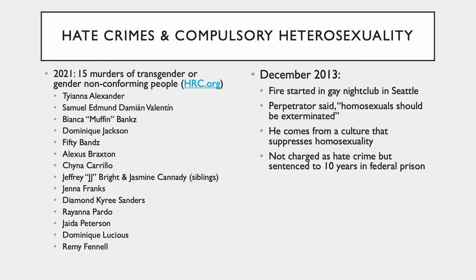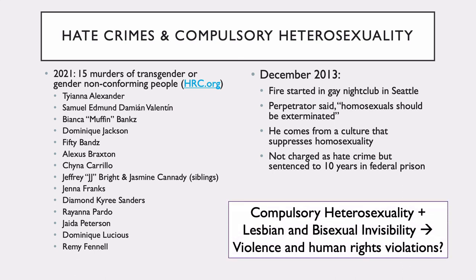Unfortunately, several hate crimes can be tied to compulsory heterosexuality. Already in 2021, there have been 15 murders of transgender or gender non-conforming people — the people listed here. Looking back to December 2013, a fire was started in a gay nightclub in Seattle; the perpetrator was quoted as saying that homosexuals should be exterminated. He comes from a culture that suppresses homosexuality, and despite not being charged as a hate crime, he was sentenced to 10 years in federal prison. What these examples show is that compulsory heterosexuality plus the invisibility of lesbian and bisexual people contribute to violence and homosexual rights violations.